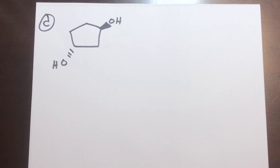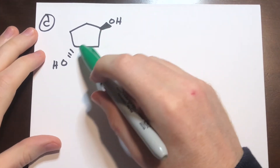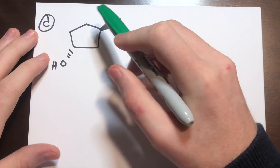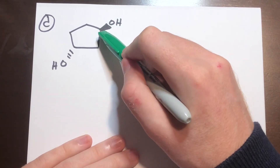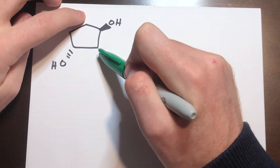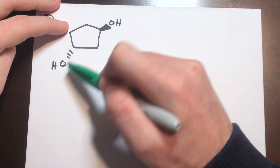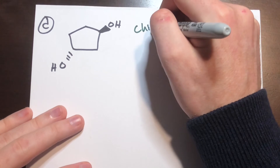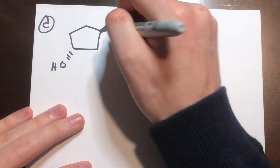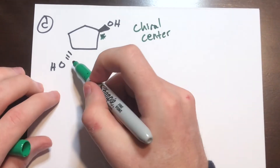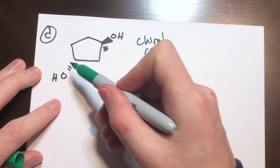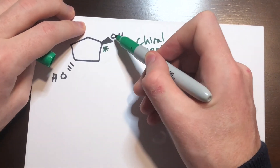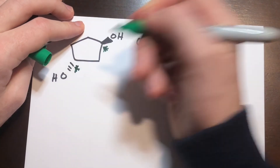Here we have another example. This molecule appears to have two centers that may be chiral. If we look at this carbon, we have an OH group — that is different from the dashed hydrogen. We have a CH2CH2 that's the same on one side, and a CH2CHOH that is different. So these are all different, making this a chiral center. The same logic applies to the other center — we have an OH, a hydrogen wedge not drawn, a CH2CH2 the same, and a CH2CHOH that is different. So this is also a chiral center.